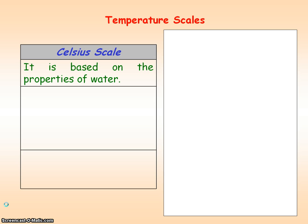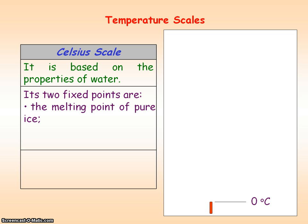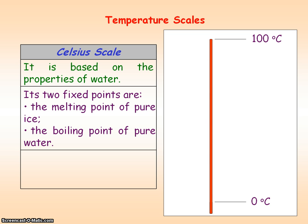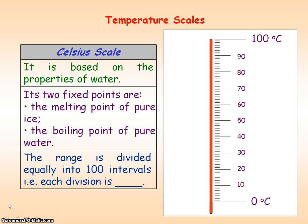The Celsius temperature scale is based on the properties of water and it has two fixed points: the melting point of pure ice, which is zero degrees C, and the boiling point of pure water, which is 100 degrees C. The range of this temperature scale is divided equally into 100 intervals, so each division equals one degree C.